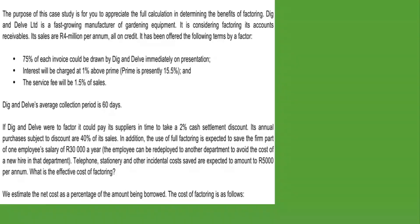We're also given additional information. If Dick and Delft were to factor, it could pay its suppliers in time to take a 2% cash settlement discount, and its annual purchases subject to discount are 40% of its sales. In addition, full factoring is expected to save part of one employee's salary of 30,000 rand per year, as the employee can be redeployed to another department. Telephone, stationery, and other incidental costs saved are expected to amount to 5,000 rand per annum. What is the effective cost of factoring?